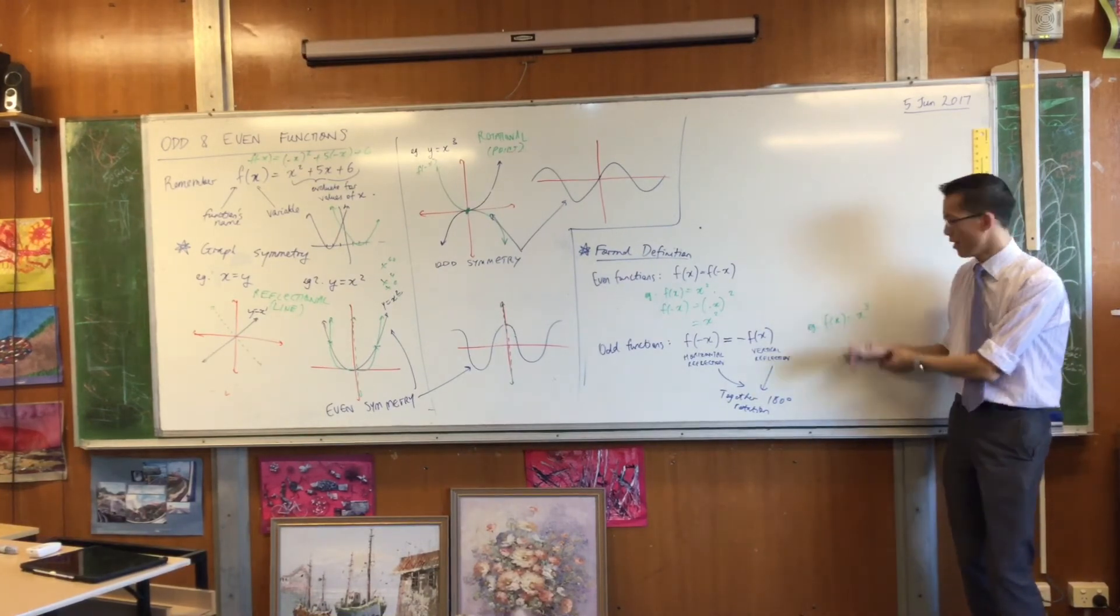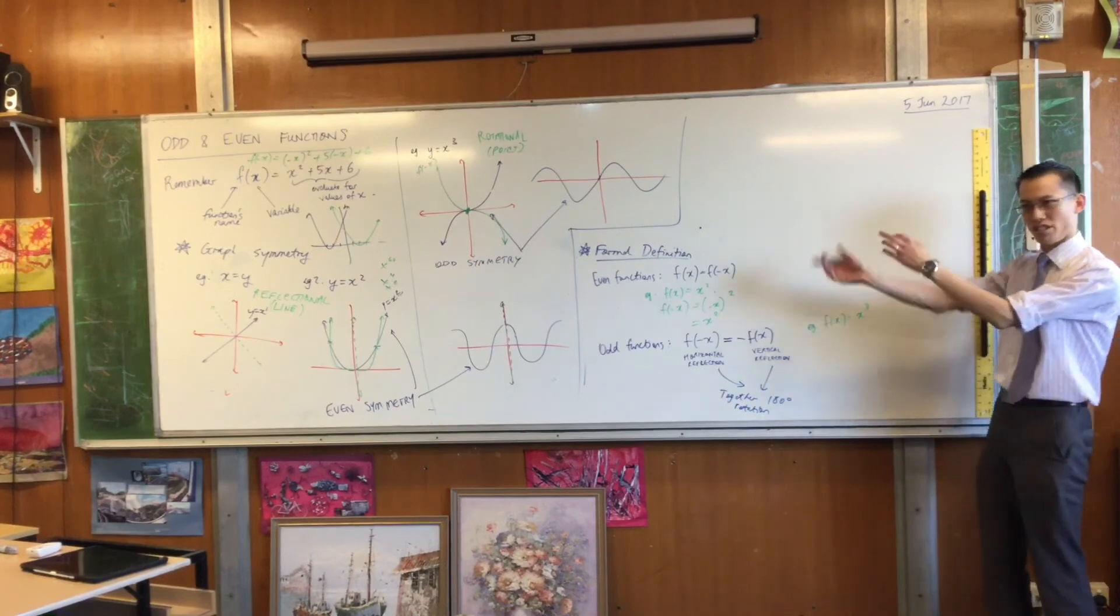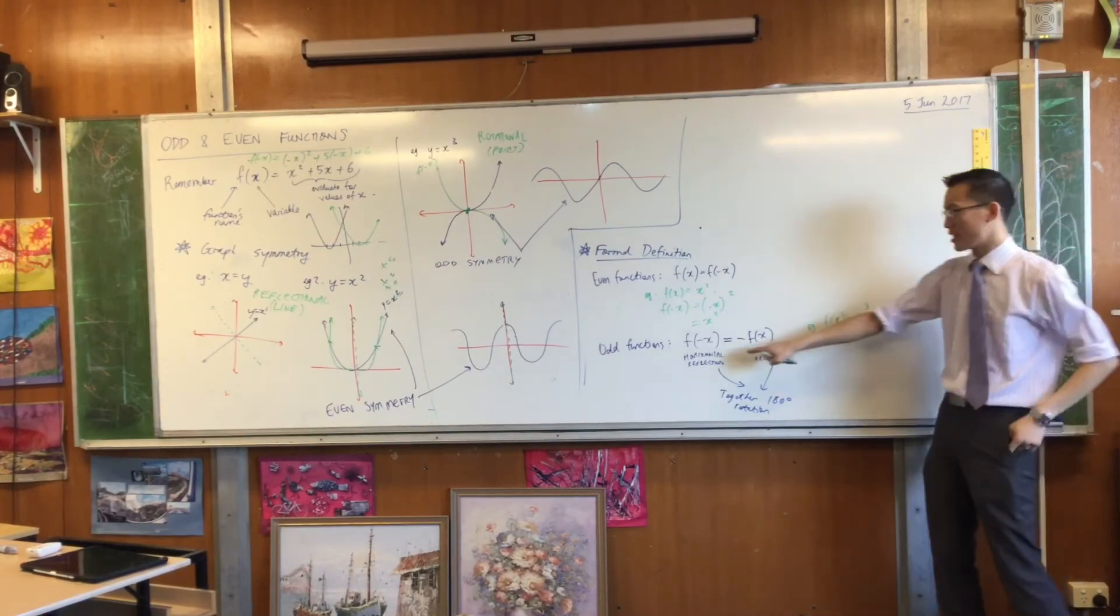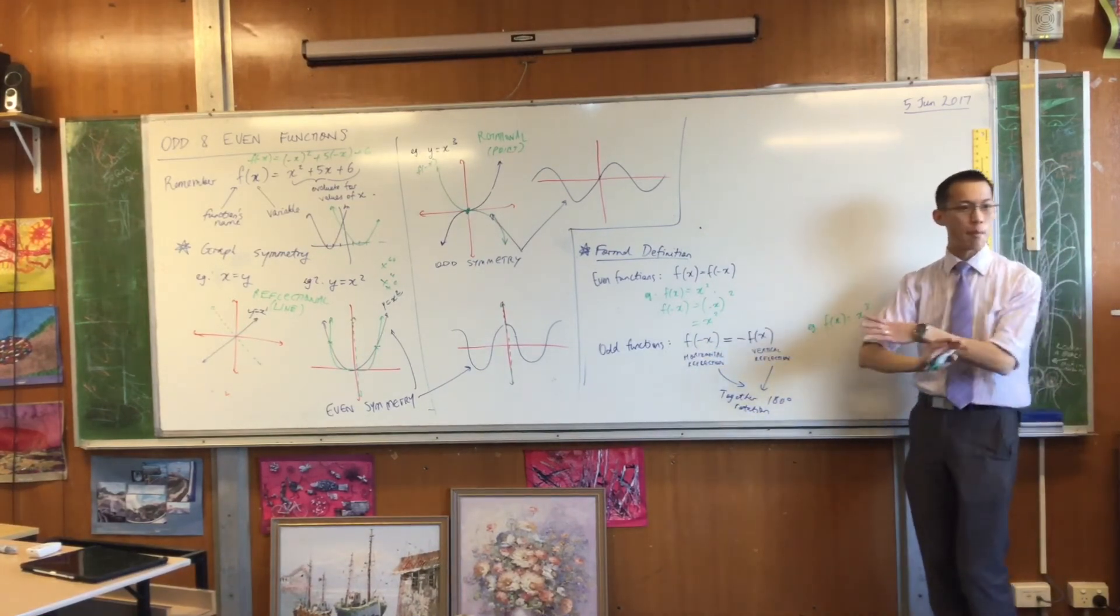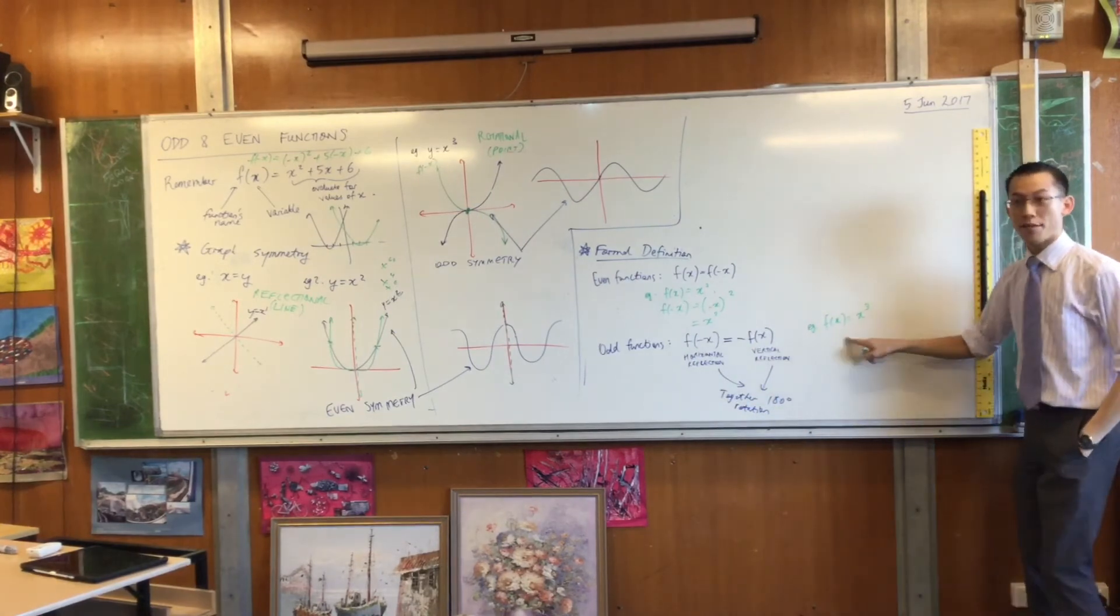Rather than sort of vaguely draw a picture and say it kind of looks like that, this formal definition here just sort of maps it out for you. If this is what f of x is, then tell me what f of negative x is.